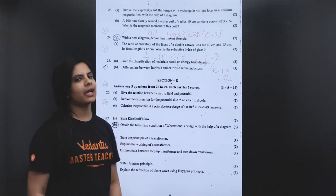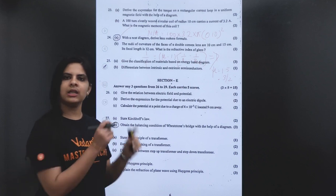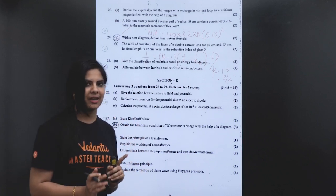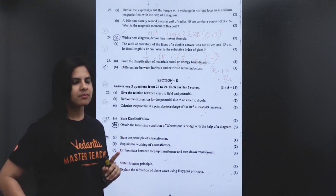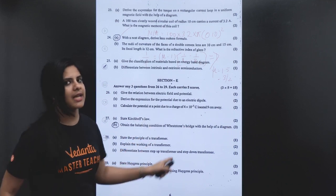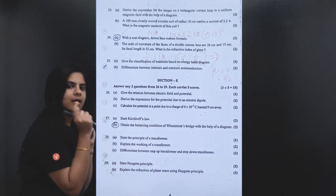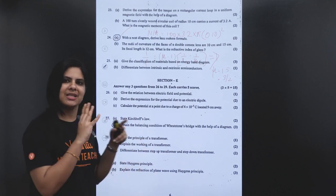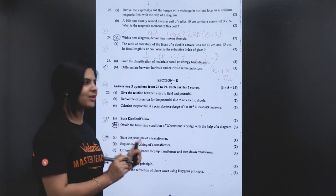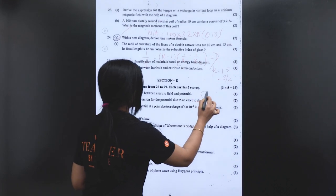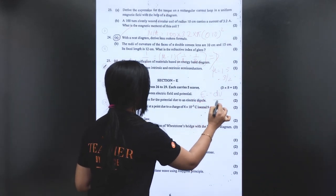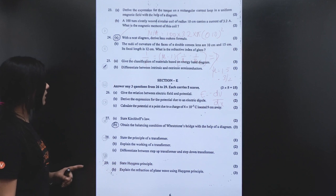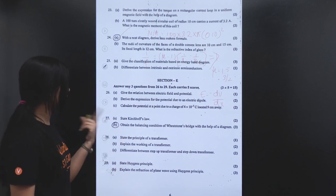Give a relation between electric field and potential. In this chapter I will ask how to derive this. Electric field is equal to minus dV/dx. Next, derive the expression for potential due to an electric dipole.